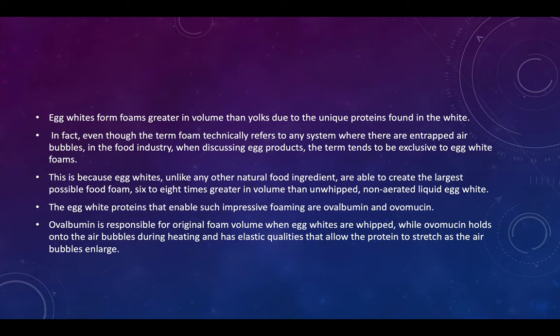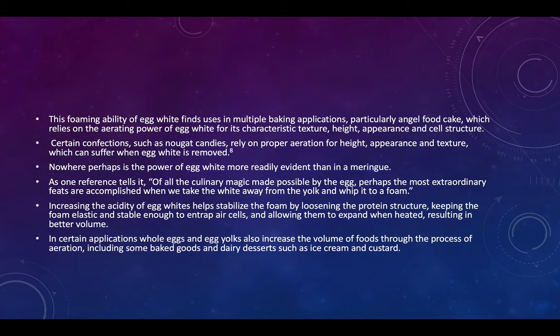The egg white proteins that enable such impressive foaming are ovalbumin and ovomucin. Ovalbumin is responsible for original foam volume when egg whites are whipped, while ovomucin holds onto the air bubbles during heating and has elastic qualities that allow the protein to stretch as the air bubble enlarges. This foaming ability finds uses in multiple baking applications, particularly angel food cake, which relies on the aerating power of egg white for its characteristic texture, height, appearance, and cell structure. Certain confections such as nougat candies also rely on proper aeration, which can suffer when egg white is removed.